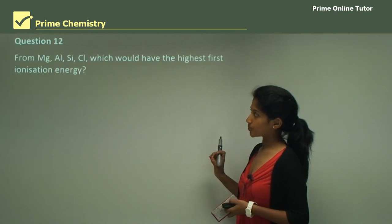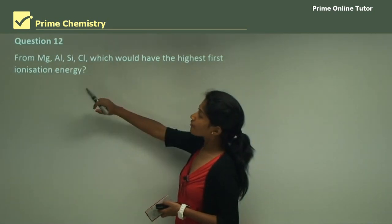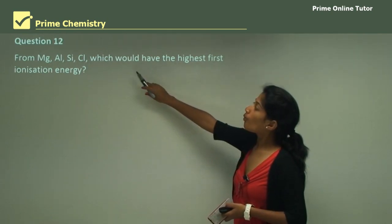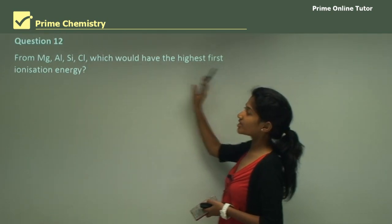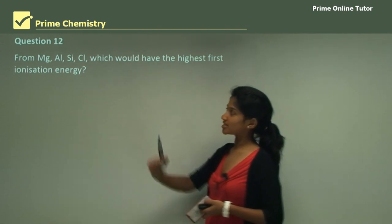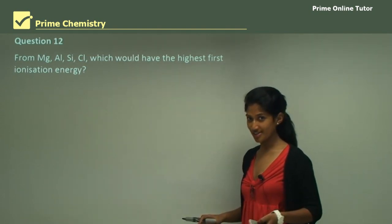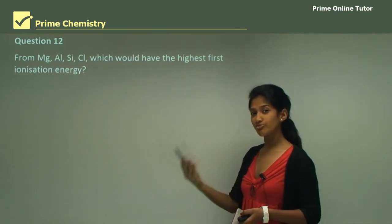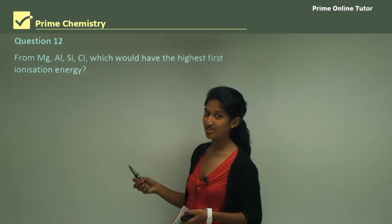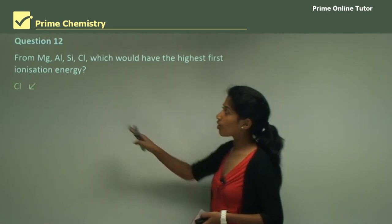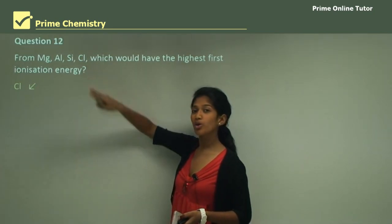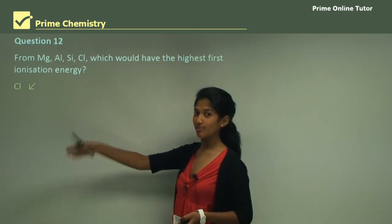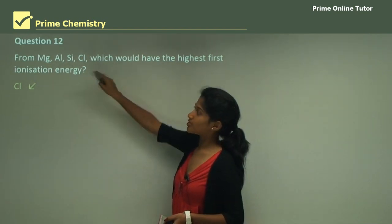Question 12: from magnesium, aluminium, silicon, and chlorine, which would have the highest first ionization energy? To work this out you refer to the periodic table. The highest first ionization energy means the least reactive element. Chlorine, being in Group 7 on the right side of the periodic table, has the highest first ionization energy — so chlorine is the correct answer.